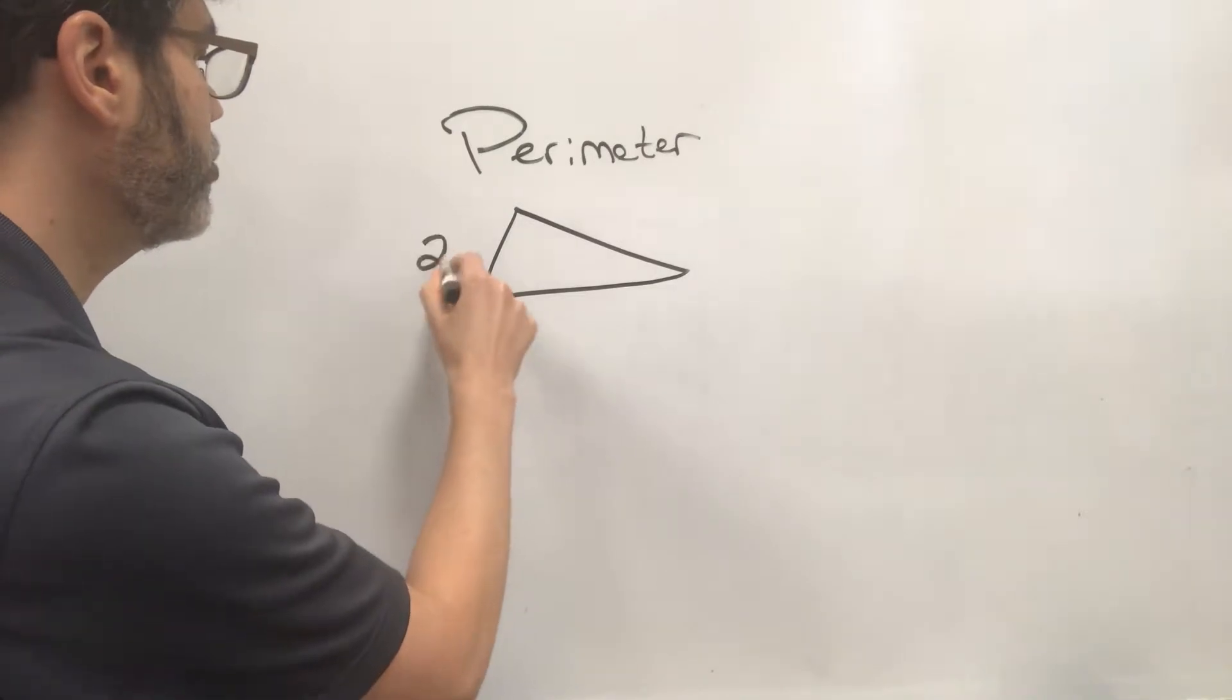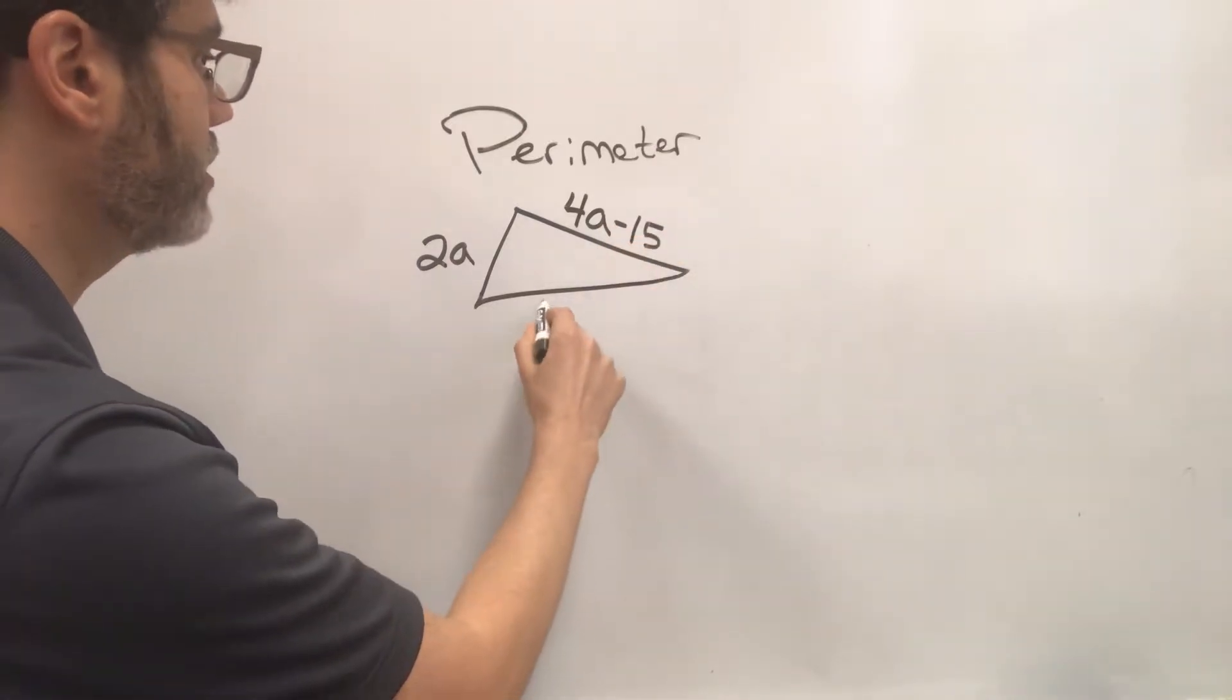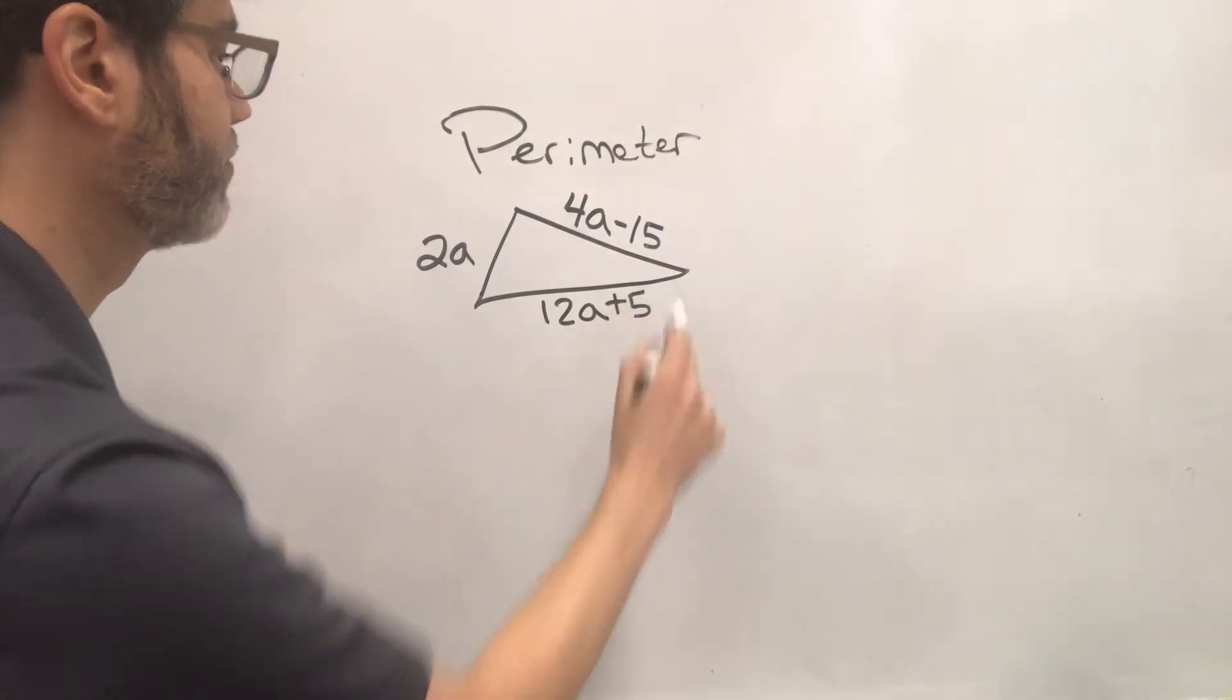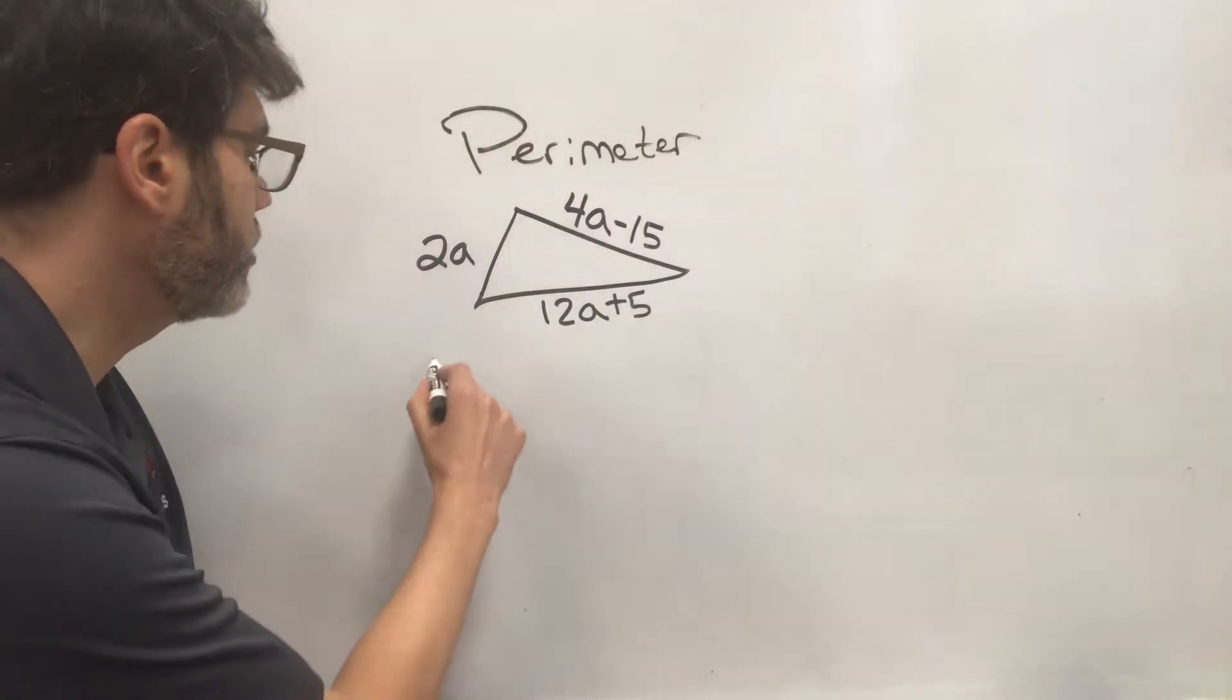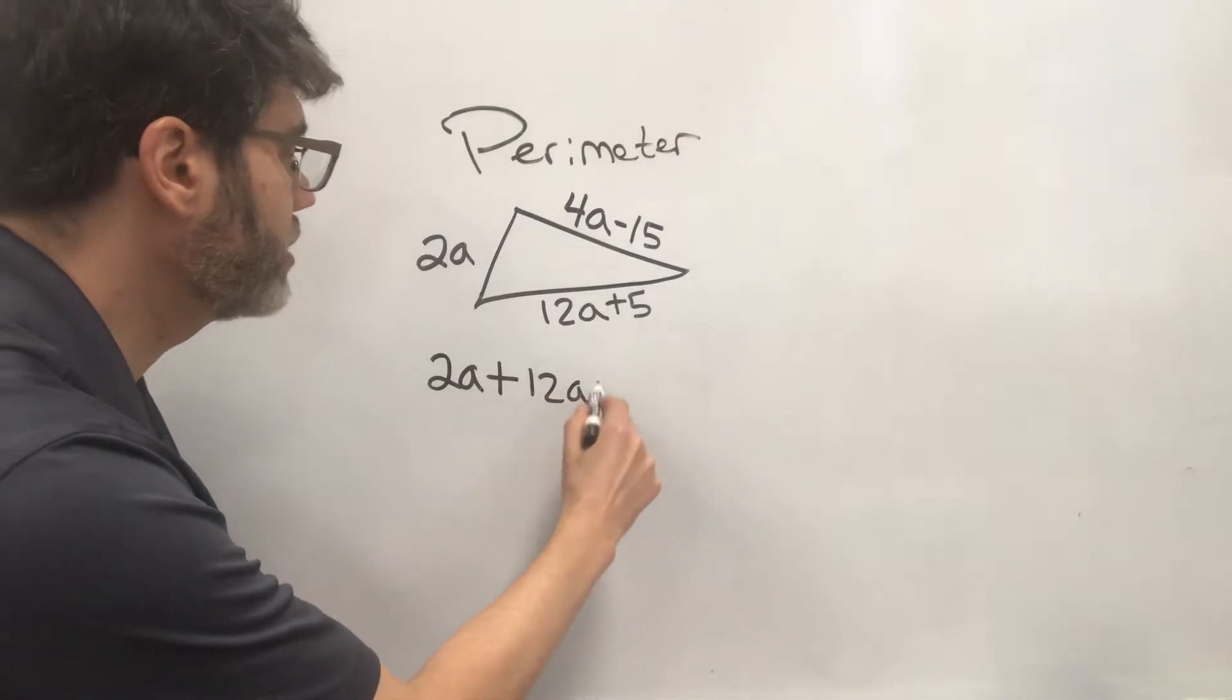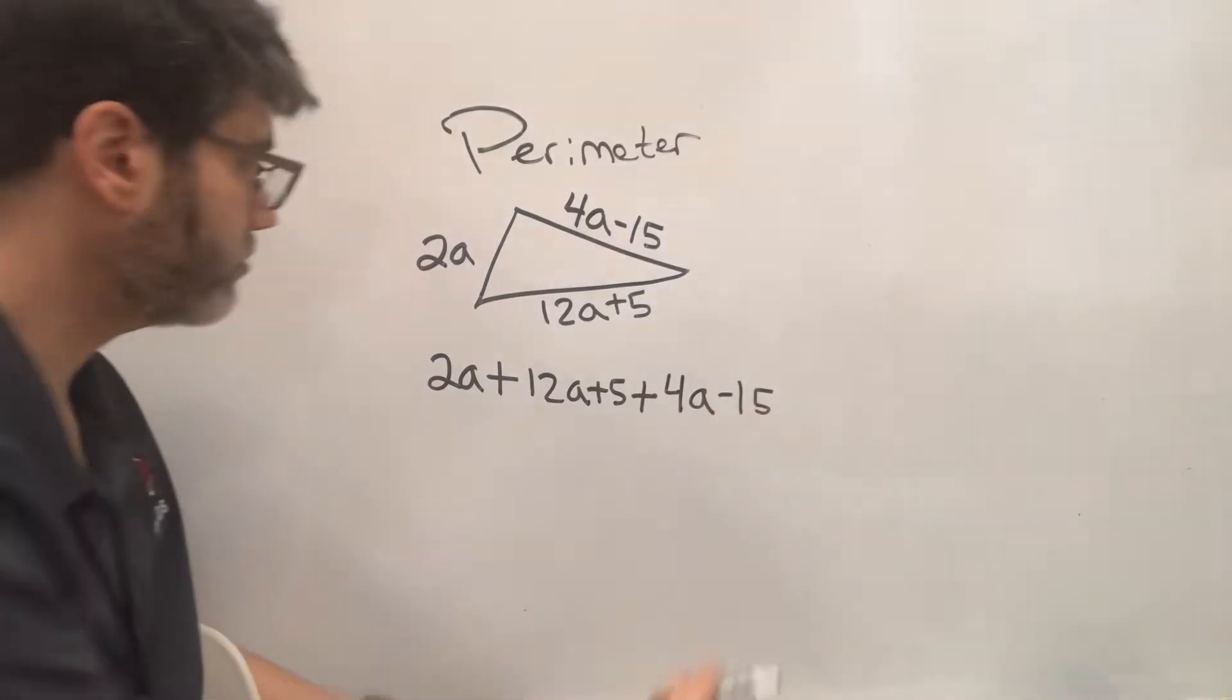Let's say this is 2a, this is 4a minus 15, and then this is 12a plus 5. So if we were to figure out what the perimeter of this shape would be, you'd have to add them all together.